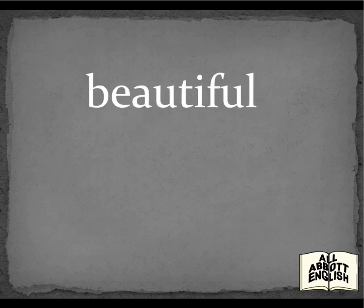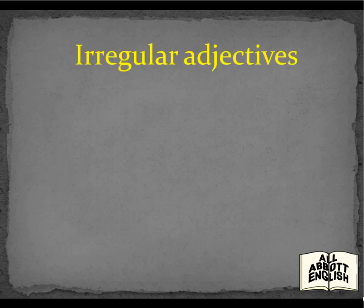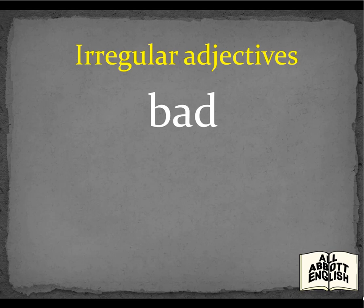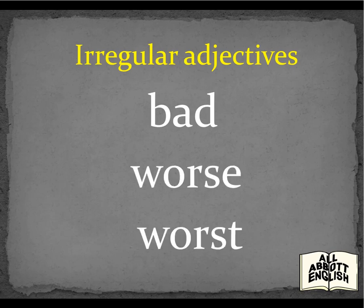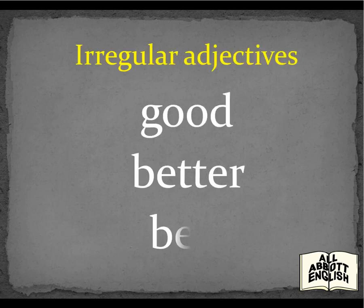Beautiful — More Beautiful — Most Beautiful. There are also irregular adjectives which don't follow set rules. They use completely different forms. For example: Bad — Worse — Worst. Good — Better — Best.